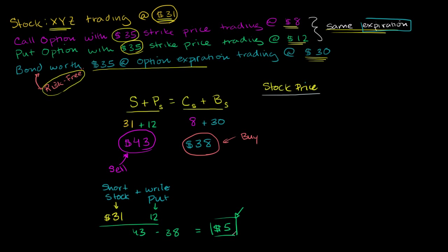So I claimed in the last video that we made a $5 risk-free profit by spending $38 to buy a call and a bond. And we got $43 by shorting a stock and essentially writing a put option. What I want to do in this video is verify that we really do have all of our bases covered.